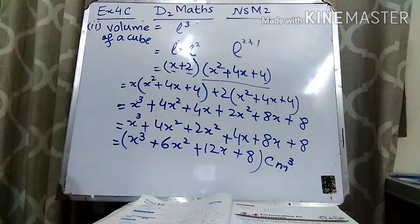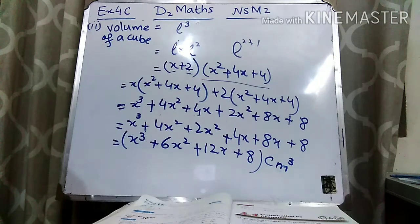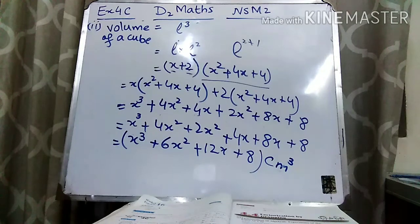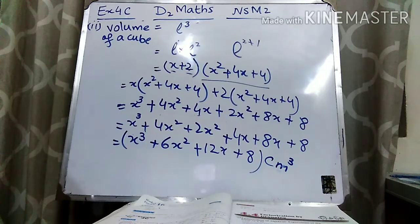So this is the complete expression. We are finding out the volume, and the unit for volume is centimeters cubed. So the answer is x³ + 6x² + 12x + 8 centimeters cubed.